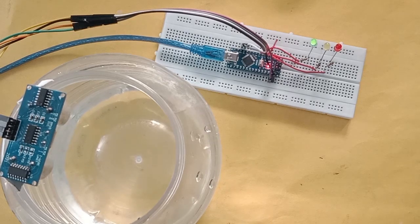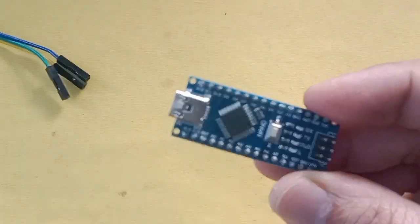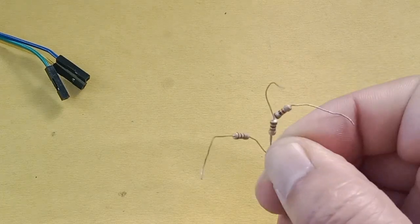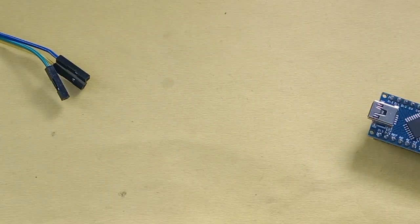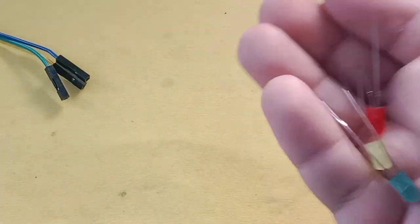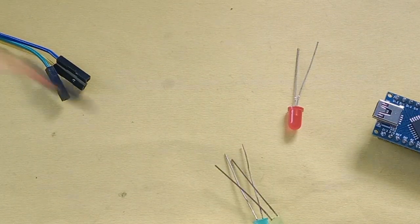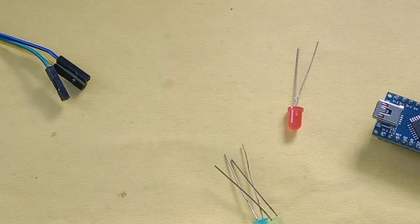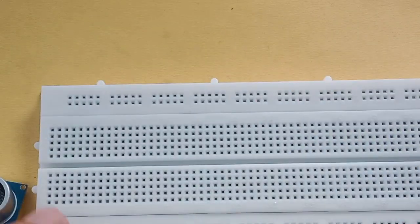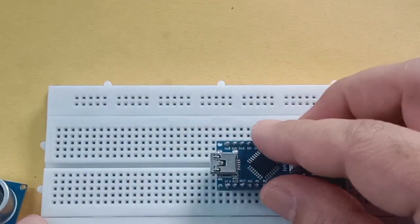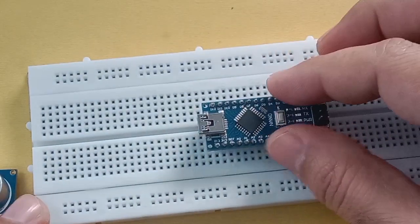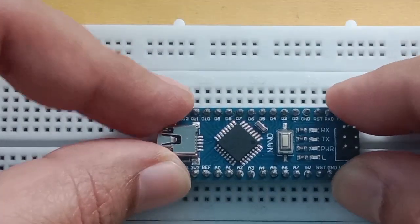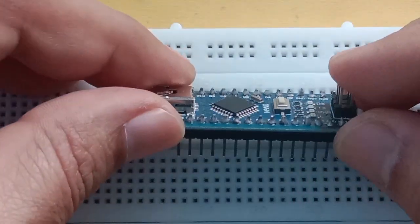To build this project we need Arduino Nano, ultrasonic sensor, resistors, three LEDs, jumper wires, and of course the breadboard. The connection is very simple. Every single detail to build this project is given in this video. This is a very simple project, does not need any kind of soldering.